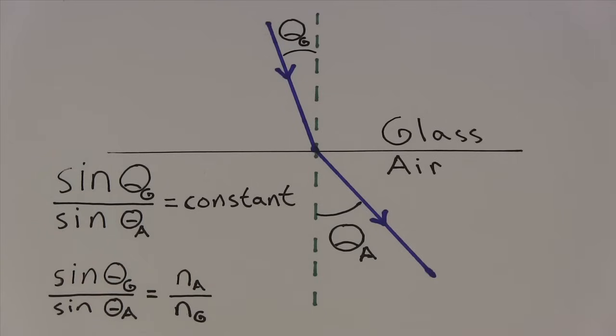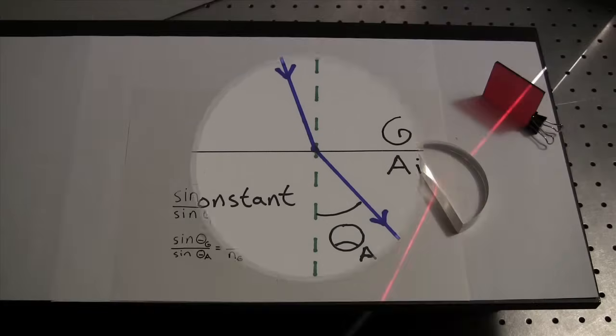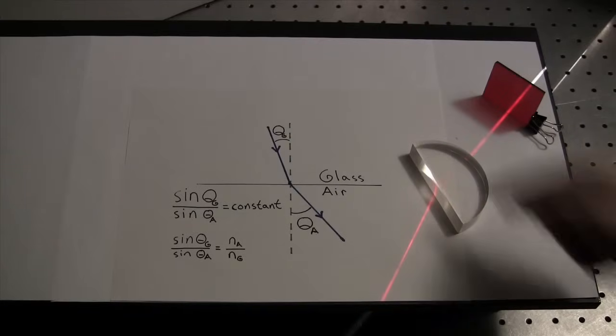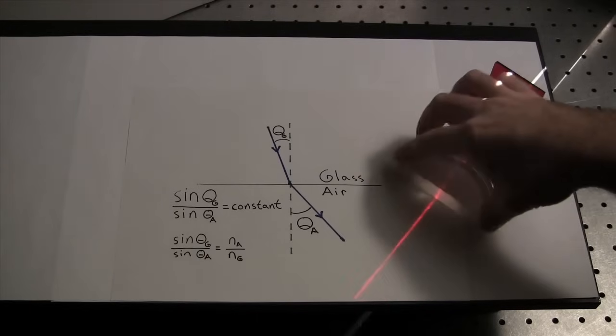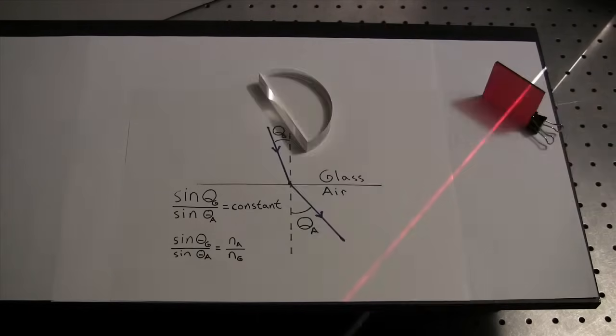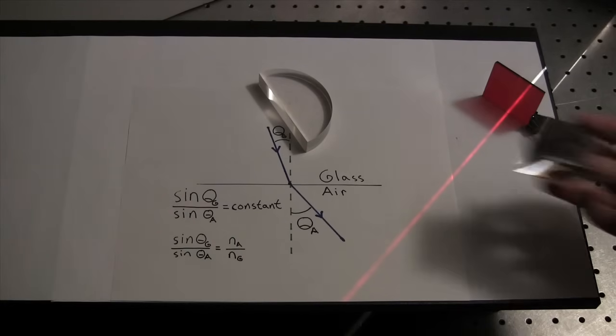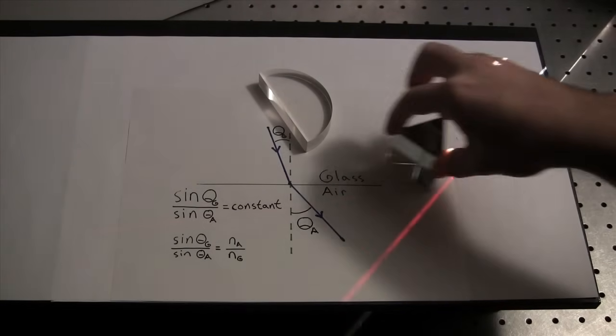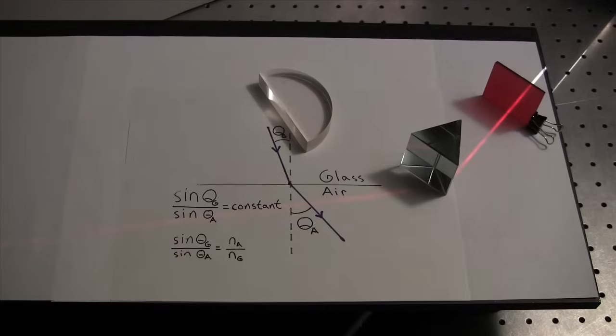We now know this is a form of Snell's Law, where the ratio of the sines of the angles is equal to the inverse ratio of the refractive indices of the materials, where the refractive index of the material is related to how fast light propagates through it. This expression allows us to predict what will happen at a planar boundary as we change the angle of incidence. It also allows us to deal with more complicated shapes, like this triangular prism. It's just a matter of geometry and keeping track of the angles.